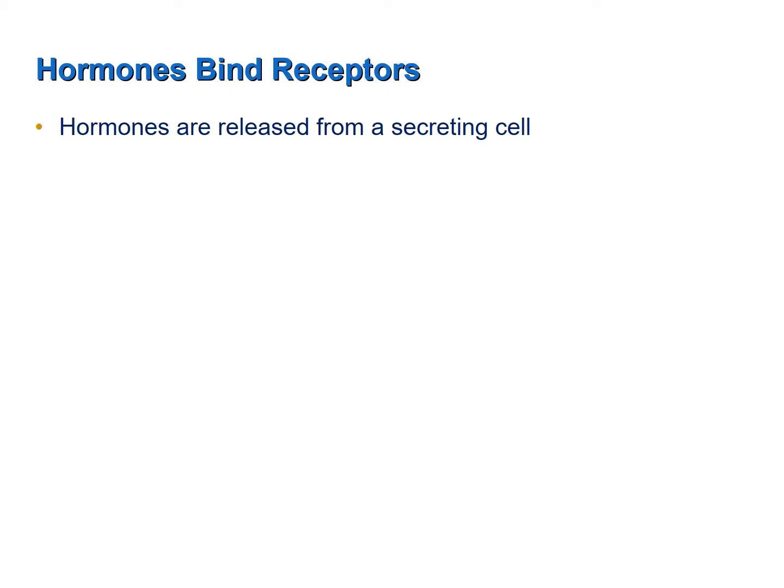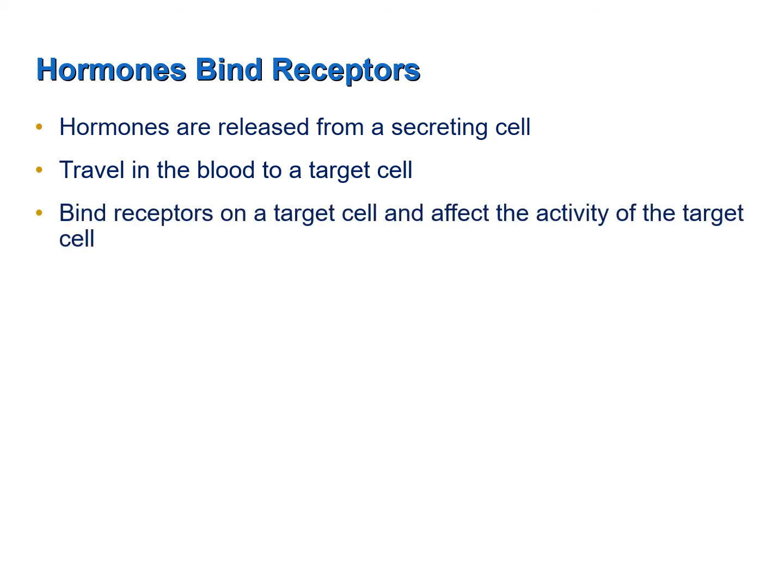Let's talk about how a hormone causes changes in its target cell. A hormone is released by a secreting cell, then travels in the blood to a target cell. In a similar manner that a neurotransmitter causes changes in its target cell, a hormone binds a receptor on or in the target cell. In response to binding that receptor, changes occur in the metabolism of that cell — the chemical reactions occurring in that cell change.